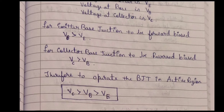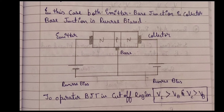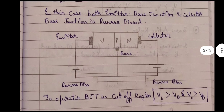The next is the cutoff region. In the cutoff region, both the emitter-base junction and the collector-base junction are reverse biased. The configuration is different — both junctions will be reverse biased and the flow of electrons will take place in a different manner. To operate the BJT in the cutoff region, the condition is that the voltage across the emitter junction should be greater than the voltage across the base junction.